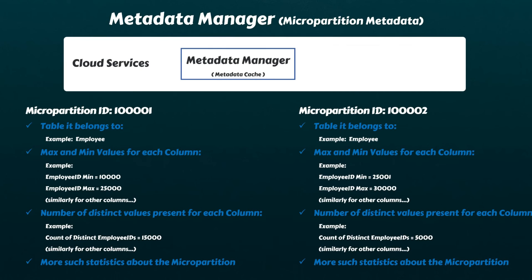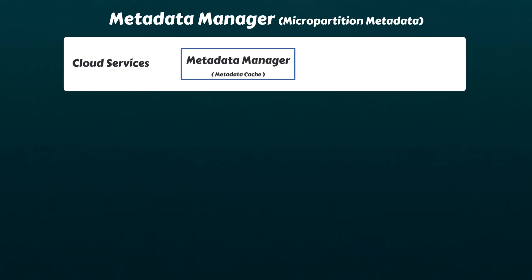Furthermore, Snowflake maintains extensive metadata about each micropartition. This includes details such as what table each micropartition belongs to, the minimum and maximum values for each column within the micropartition, the number of distinct values present for each column, and more such statistics necessary for efficient query optimization. The Metadata Manager uses caching in main memory to speed up the retrieval of frequently accessed metadata, hence it's sometimes referred to as metadata cache.